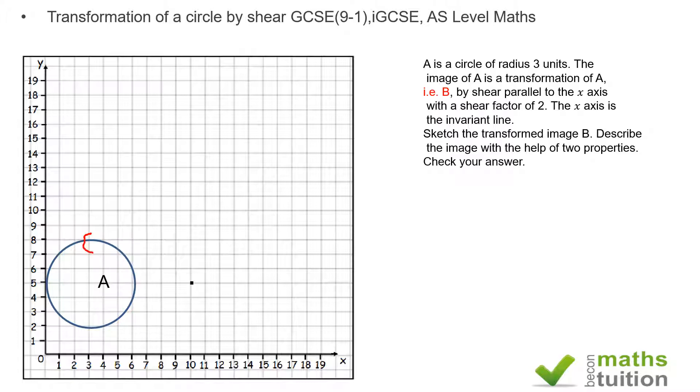Similarly, I look at this point here. The distance from the invariant line to that point is 1, 2, 3, 4, 5, 6, 7, 8. So that point after shear will be displaced by 16 units.